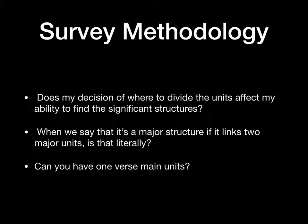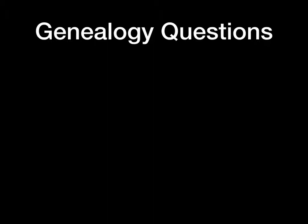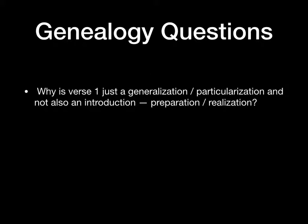After you've done your main units and subunits and have your outline, you should give a couple of sentences that justify why you broke up the main units where you did. Just forcing yourself to write that out will be helpful. Now, regarding the genealogy itself, several of you are interested in why I didn't call verse 1 'preparation' or 'realization.' Well, the reality is you can — that would be appropriate, and even an appropriate amendment to my genealogy.